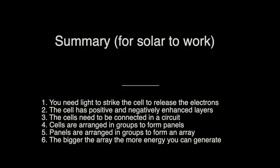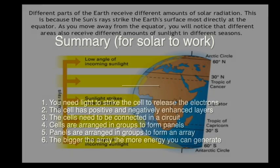So here's a summary. Number one, you need light to strike the cell to release the electrons. Number two, the cell has positive and negatively enhanced layers. Number three, the cells need to be connected in a circuit. Number four, cells are arranged in groups to form panels. Five, panels are arranged in groups to form an array. Number six, the bigger the array, the more energy you can generate.